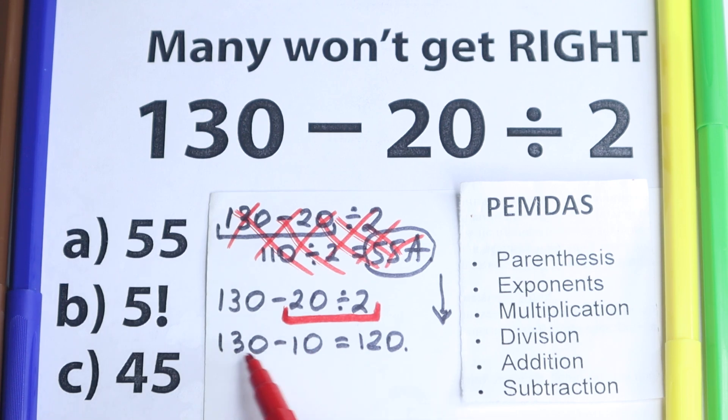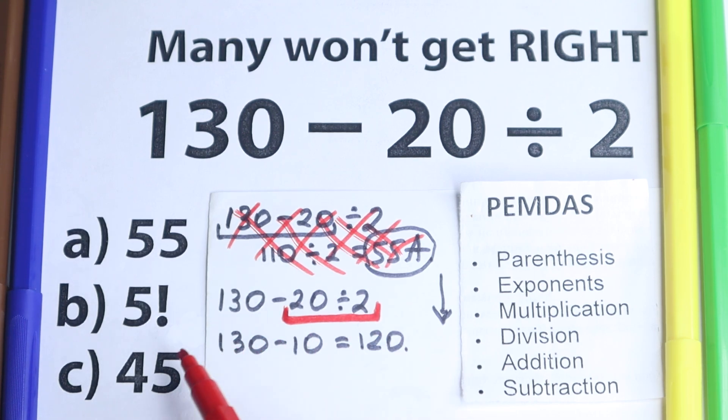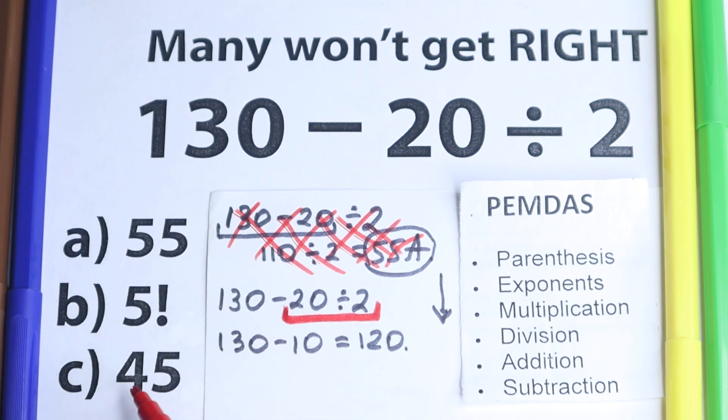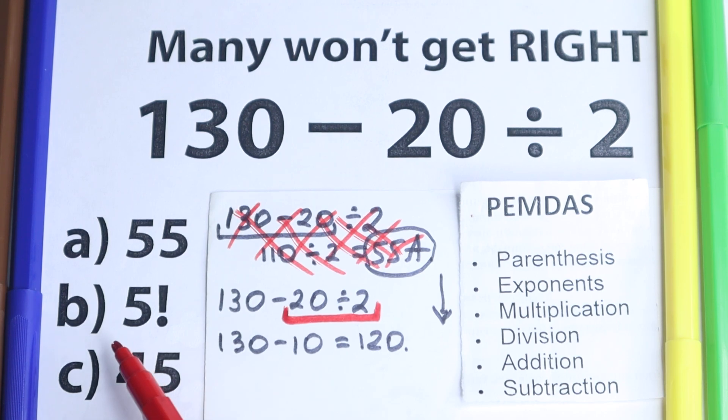What about the correct solution? This is the correct solution. But right here we need to choose one option. What is the correct option to this problem? Because 120, this is not A, this is not C. What about this B? We have 5 factorial.